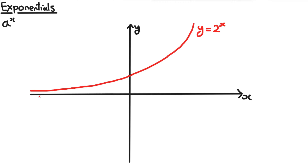Here is the graph of the exponential 2 to the power of x. This graph makes sense. As x increases, it goes 2 to the power of 2, 2 to the power of 3, 2 to the power of 4 — it gets bigger and it goes up like this.